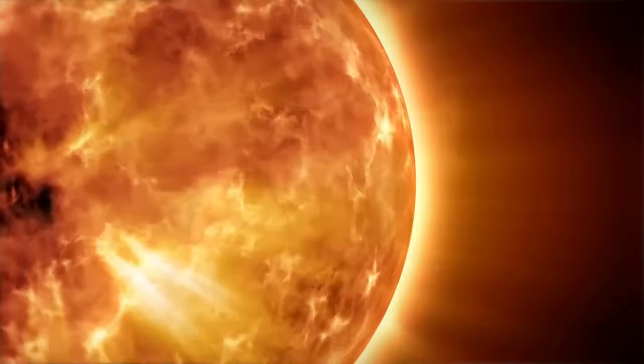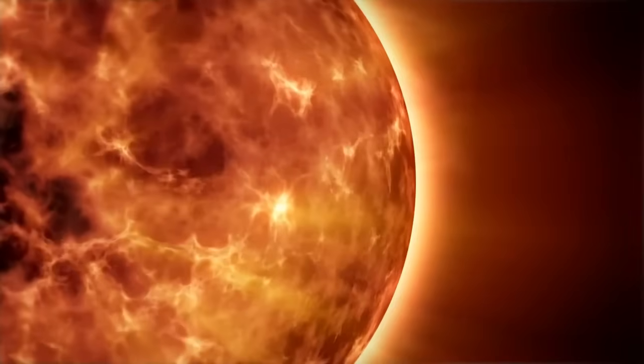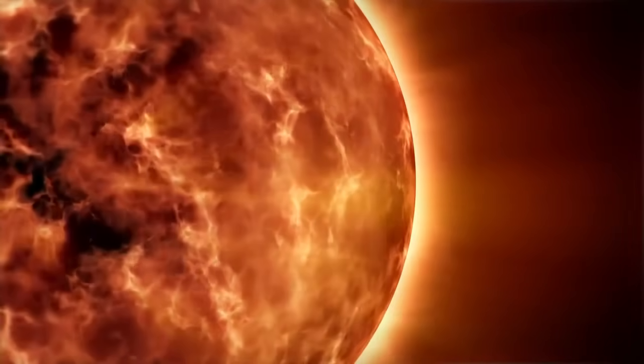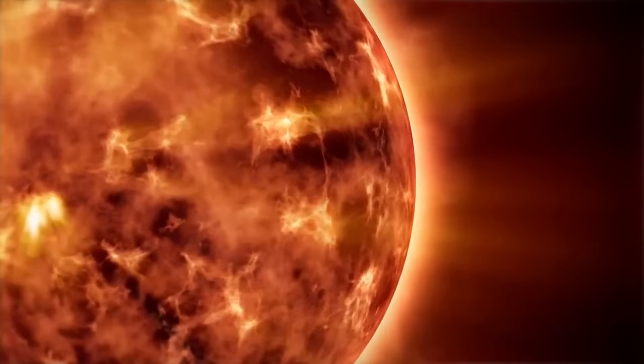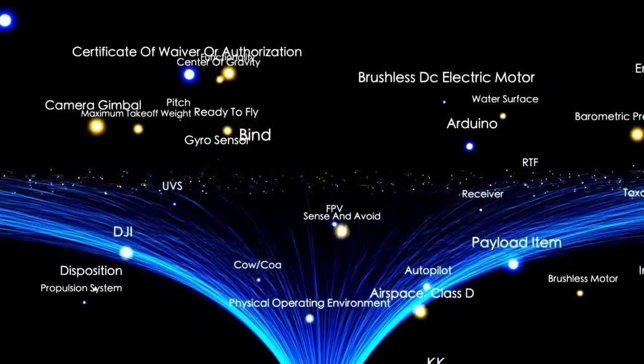This lower temperature means that Betelgeuse emits much less energy per unit area compared to the sun. That is why, despite being one of the largest stars we know, it appears much dimmer. Betelgeuse is like that giant that is satisfied with a low profile and doesn't need to show off its size to feel important.